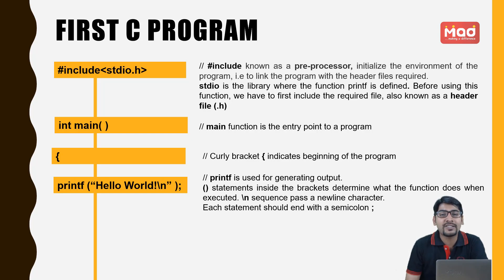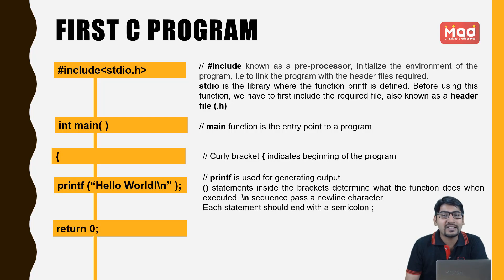Statements inside the brackets will determine what the function does when executed. \n is an escape sequence — it will pass a newline character. Anything printed next will be printed on the new line. Every statement should end with a semicolon. Next comes the return 0 statement.